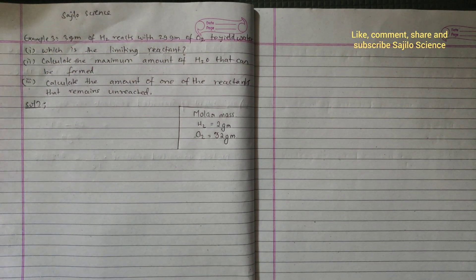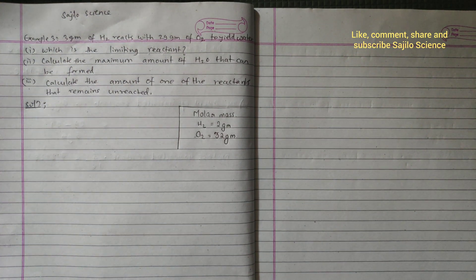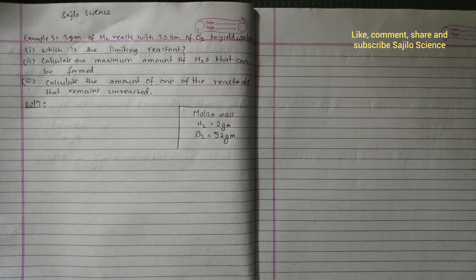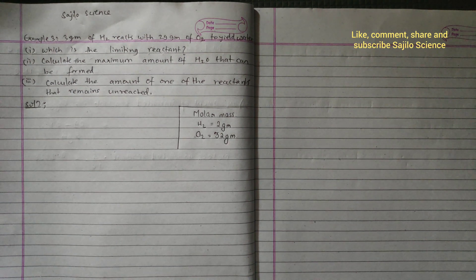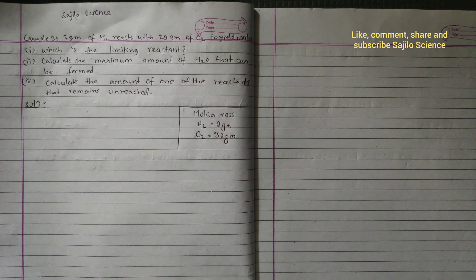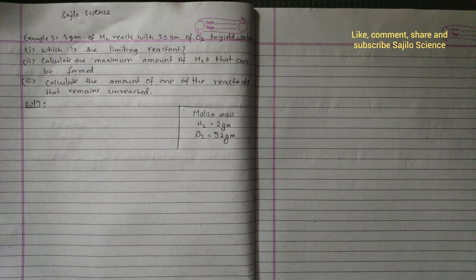3 grams of hydrogen react with 29 grams of oxygen to yield water. The first question is: which is the limiting reactant? Second, calculate the maximum amount of water that can be formed. Third, calculate the amount of one of the reactants that remains unreacted.